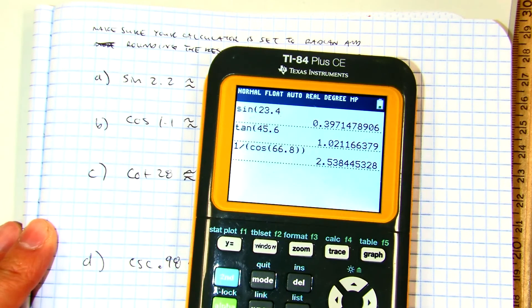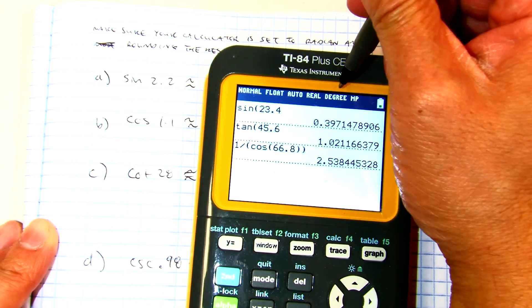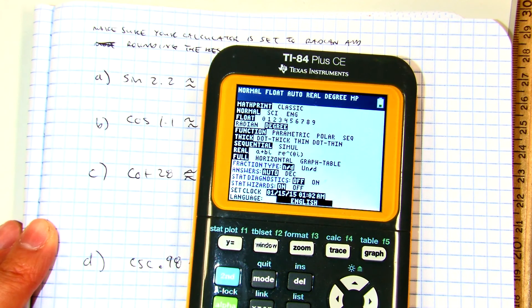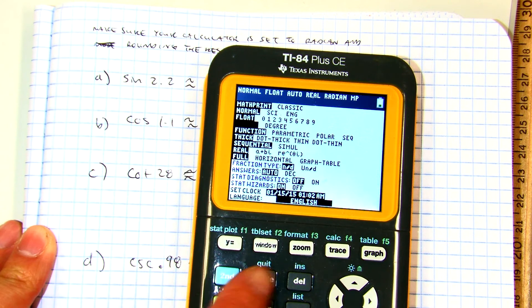So my calculator here is in degree mode. I'm going to press mode, go down to radian, highlight it, press enter. To get out of here, I'm going to press second mode or to quit.